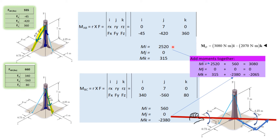The result for cable AB is mostly in the x-direction with just a little bit in the k-direction. You can see how this cable is rotating the tree mainly around the x-axis — pulling it straight forward — and because it's not exactly on the z-axis, there's a small rotation around the z-axis too.